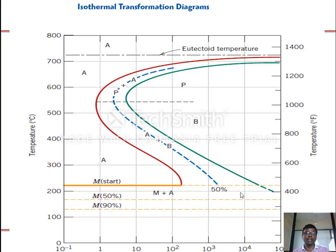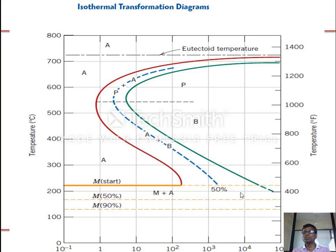The isothermal transformation diagram — also called the TTT (Temperature–Time–Transformation) diagram — has temperature in Celsius on the y-axis and time in seconds on the x-axis. It shows what happens when you take eutectoid austenite and cool it from 727°C to room temperature at different rates.